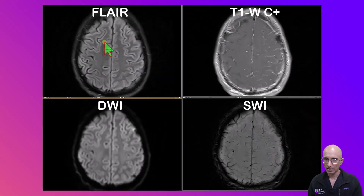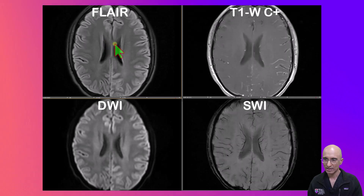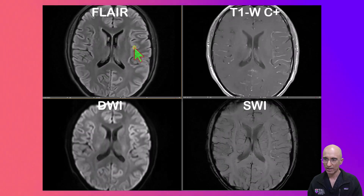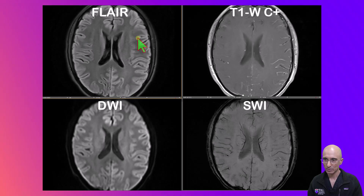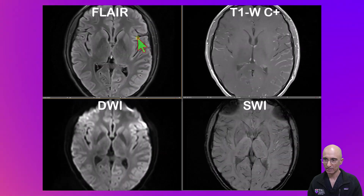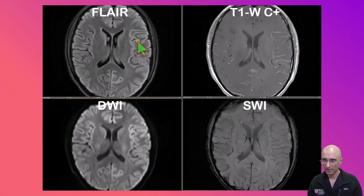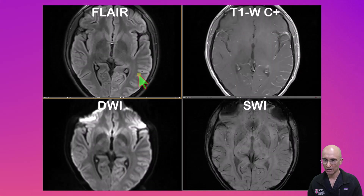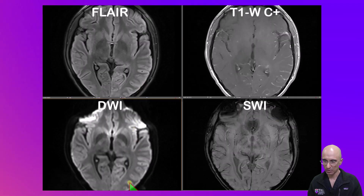On the MRI, as I scroll through, you can clearly see increased FLAIR hyperintensity in the left cerebral hemisphere cortex, most conspicuous in the region of insula, frontal, parietal, temporal and occipital regions. There is corresponding increased restricted diffusion.